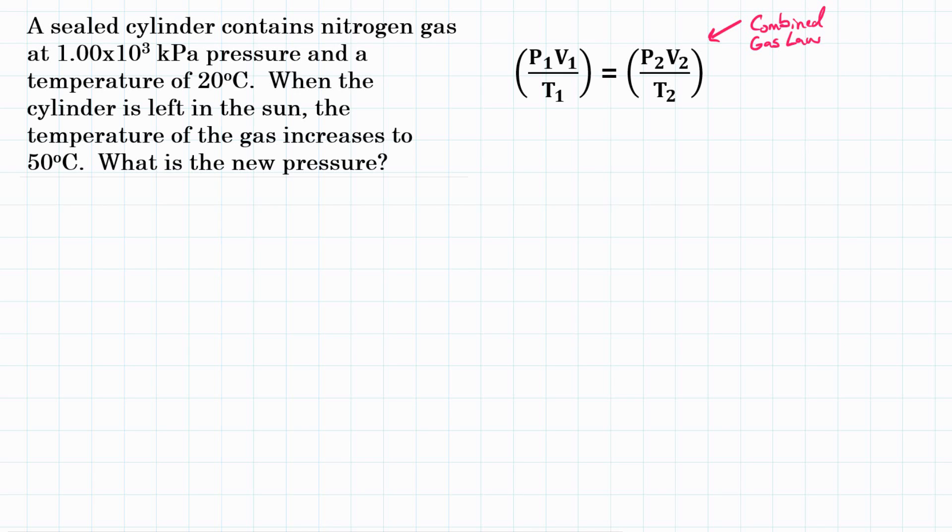A sealed cylinder contains nitrogen gas at 1.00 times 10 to the third kPa pressure and a temperature of 20 degrees Celsius. When the cylinder is left in the sun, the temperature of the gas increases to 50 degrees Celsius. What is the new pressure?